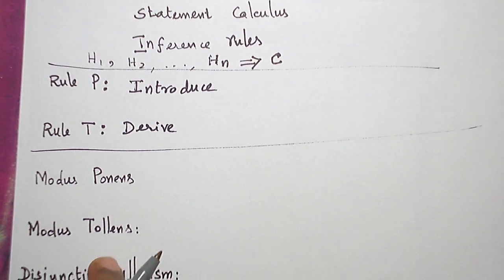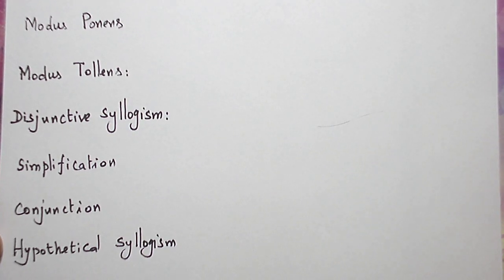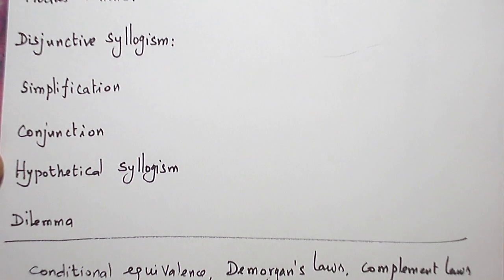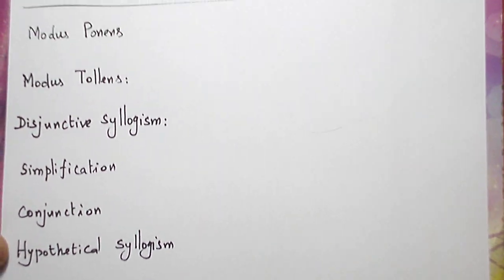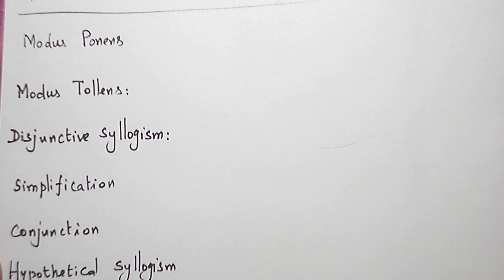Modus Ponens, Modus Tollens, disjunctive syllogism, simplification, conjunction, hypothetical syllogism, dilemma. These are the standard implications we are going to use. And when to apply which standard implications, let me explain.